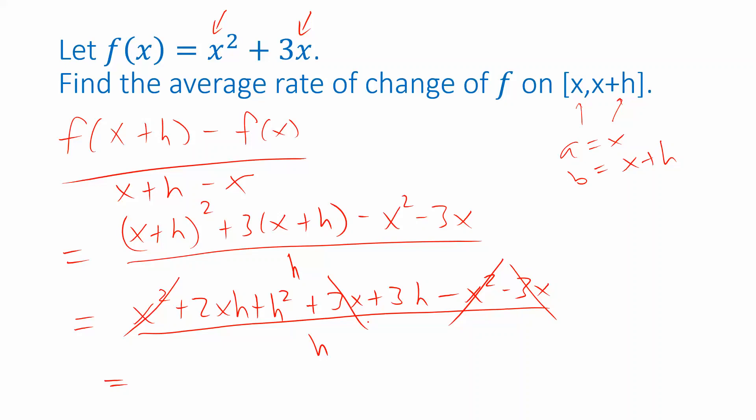2xh plus h squared plus 3h divided by h. So again we can factor an h out of the numerator leaving 2x plus h plus 3. And after factoring that h out it cancels with the h that's in the denominator. So our final answer is 2x plus h plus 3.